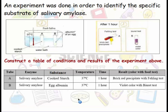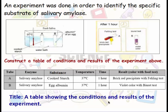Of course, we shouldn't forget the title, a table showing the conditions and results of the experiment. Now, if they didn't ask for the result, we only write a table showing the conditions of the experiment or the experimental conditions.